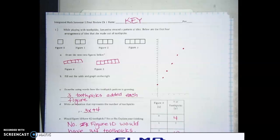Today we're looking at the integrated math one semester one final review for chapter one. Question number one says while playing with toothpicks, Samantha created a pattern of tiles. Below are the first four arrangements of tiles that she made out of toothpicks.